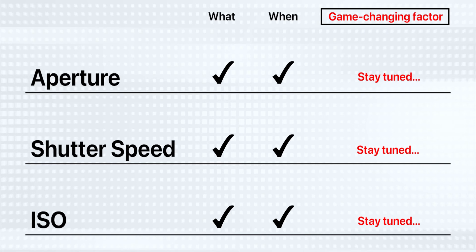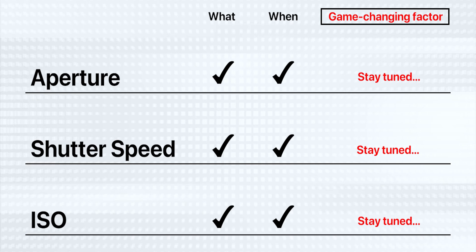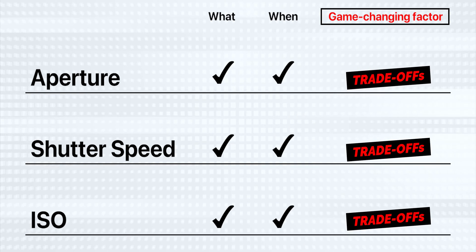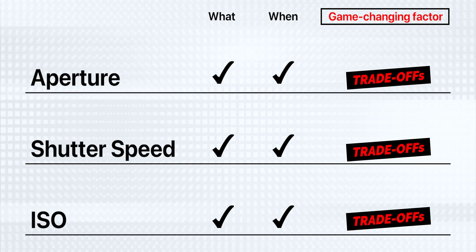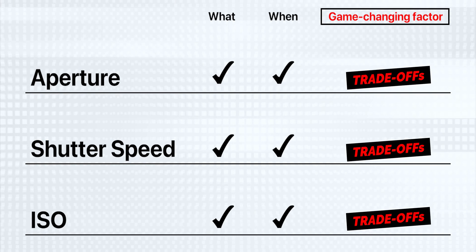That game-changing thing with aperture, shutter speed, and ISO — and they each have their own unique thing here — is trade-offs. When you're adjusting these settings, there's always going to be trade-offs, and the more you understand that, the better you're going to be able to effectively use these settings together.